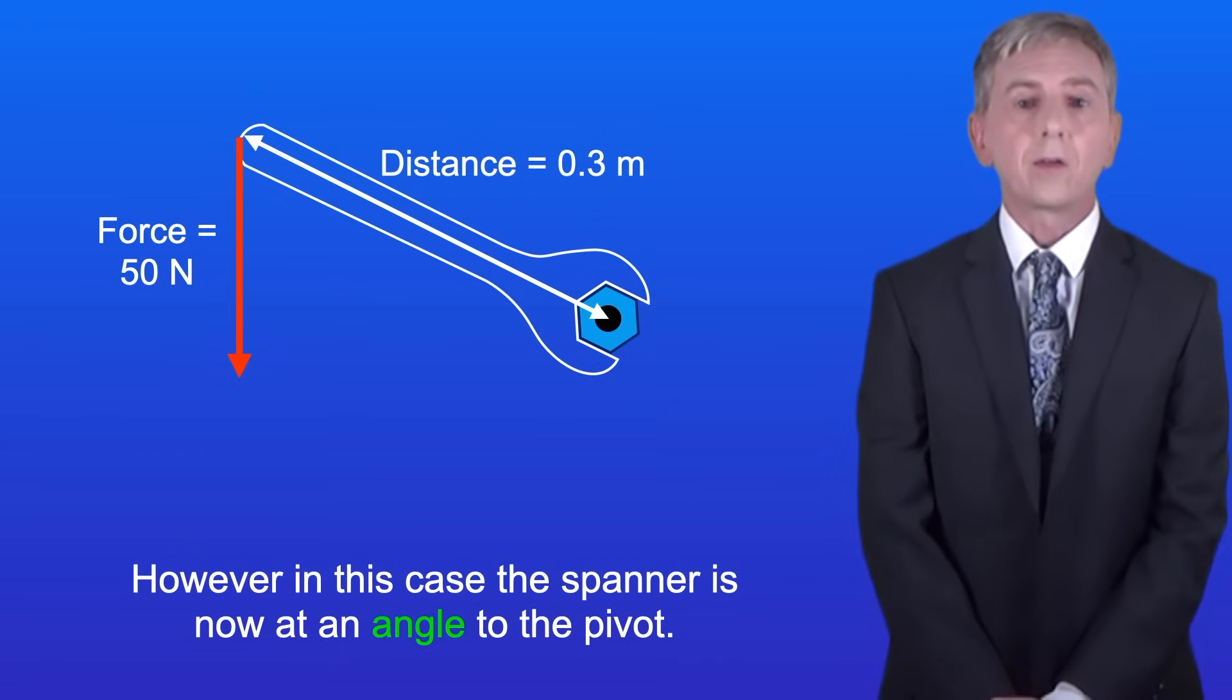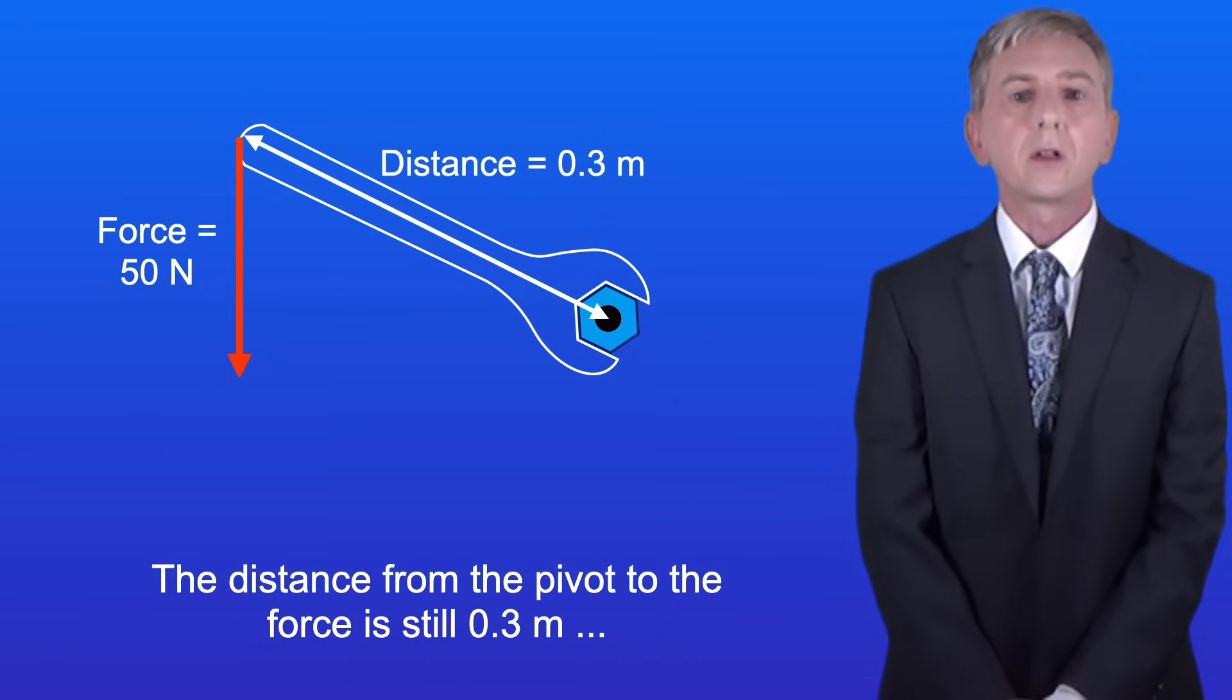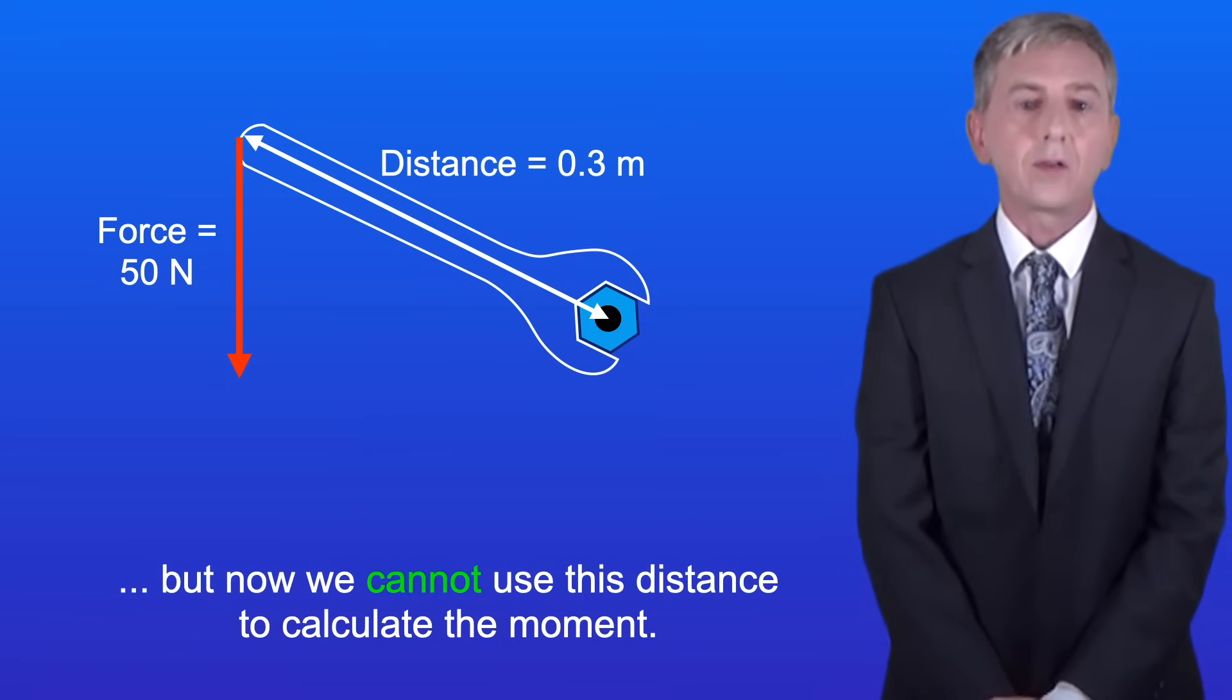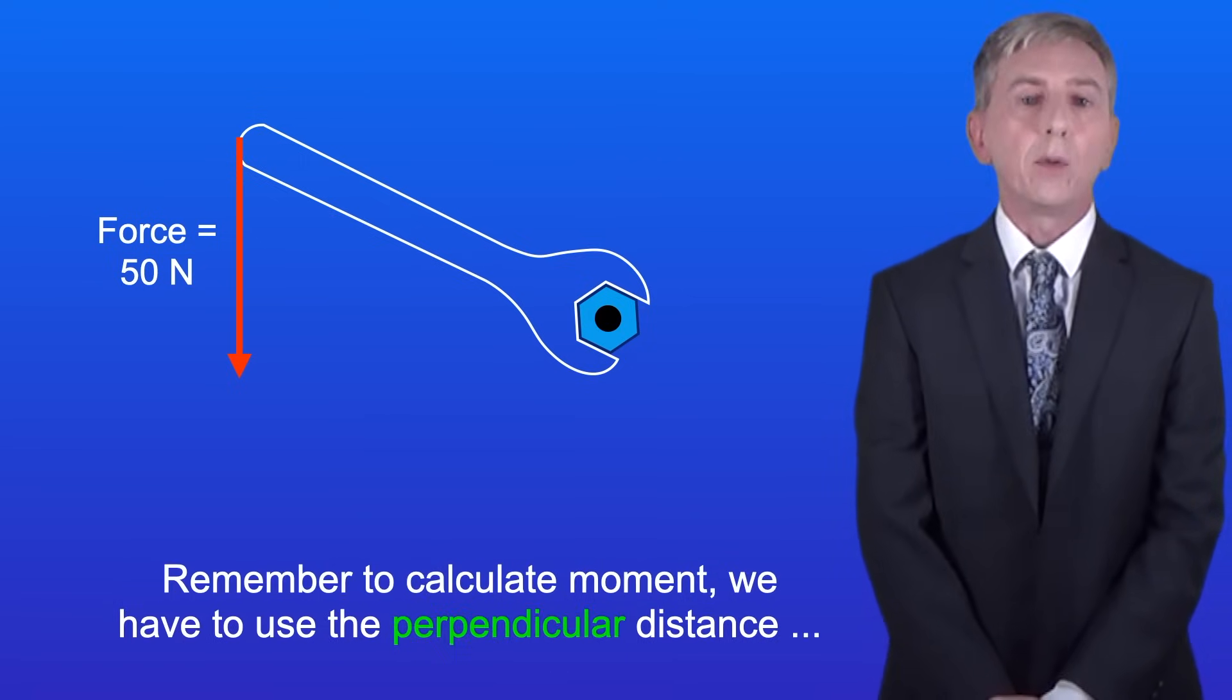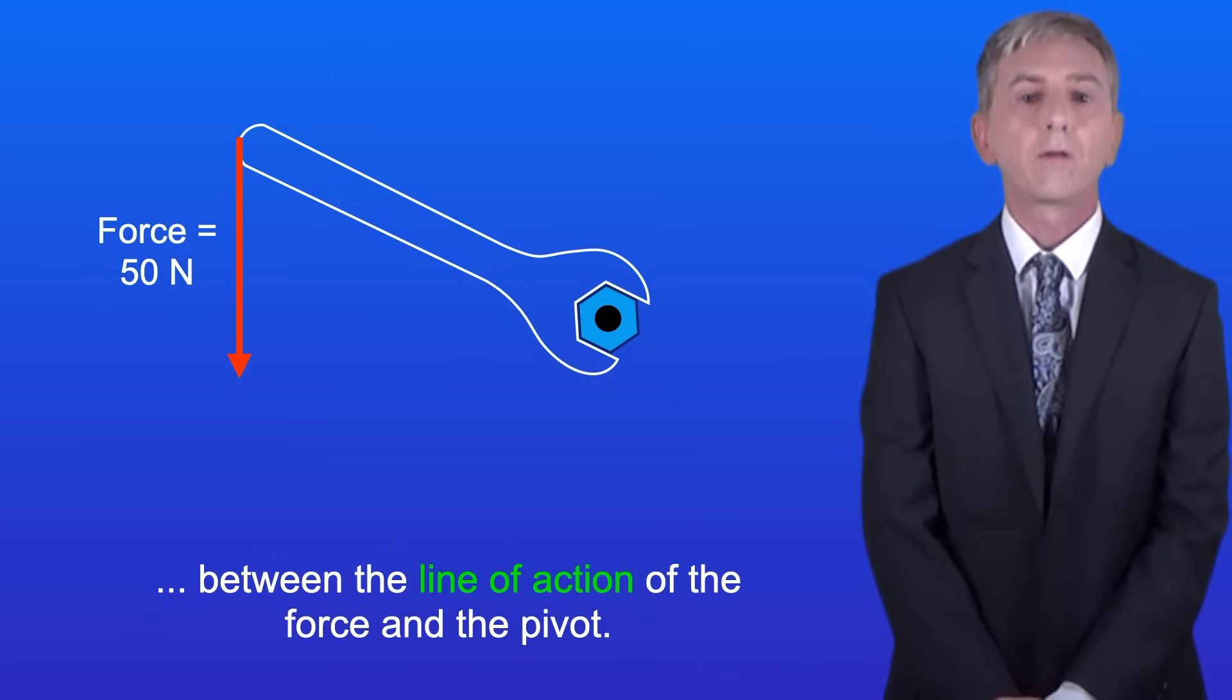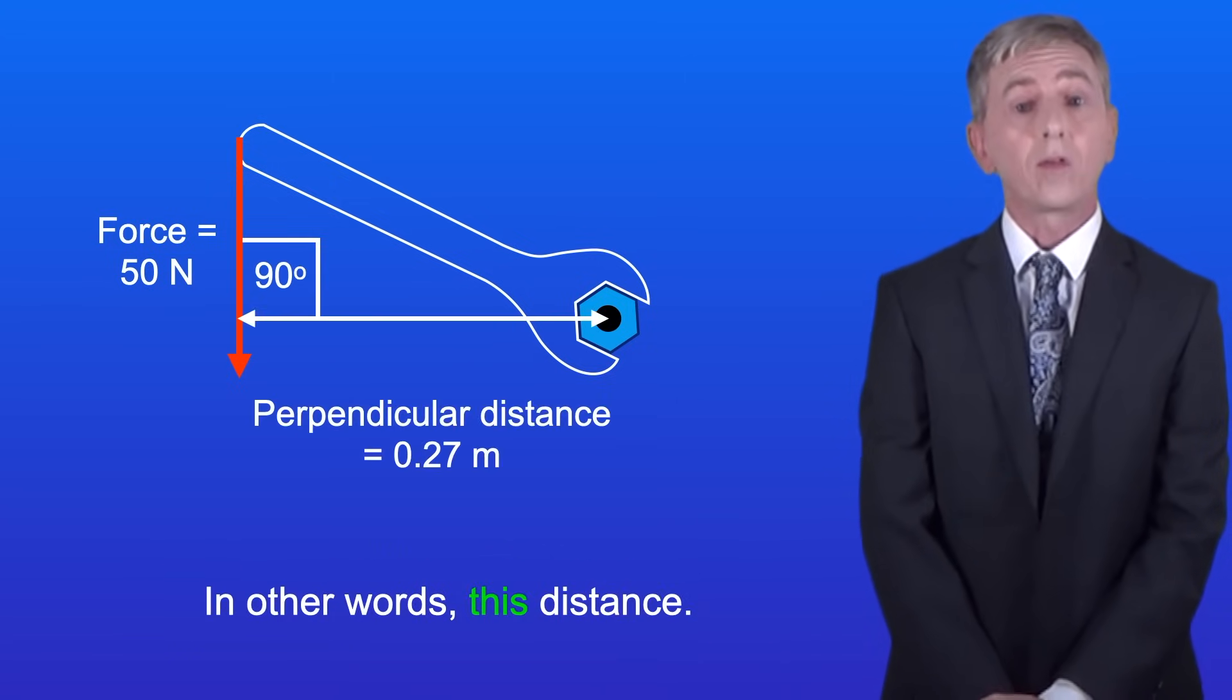However in this case the spanner is now at an angle to the pivot. The distance from the pivot to the force is still 0.3 meters, but now we cannot use this distance to calculate the moment. Remember to calculate moment we've got to use the perpendicular distance between the line of action of the force and the pivot. In other words this distance.